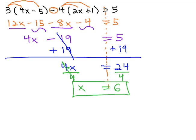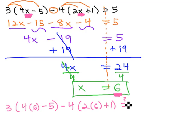We can always check our answer to make sure it works by replacing both of the x's with 6 in the original problem, and seeing if we get a true statement. Will that really equal 5 if x is equal to 6? Well, let's try it. The original problem was 3 times 4x, which is 6, minus 5, minus 4 times 2x, which is 6, plus 1, and we're hoping that will equal 5 when we're done.